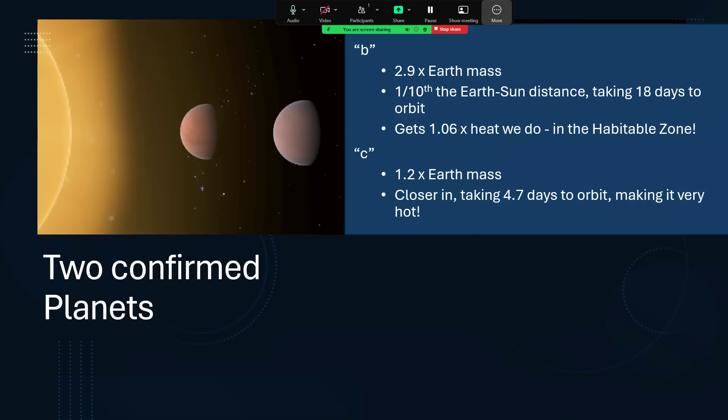Planet C, even more Earth-like in mass, 1.2 times our own, but being closer in and whizzing around every 4.7 days, that's going to make it quite warm. It's sufficiently close, really, that this is going to be a hothouse planet.